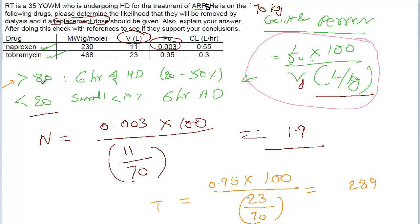It shows that if you perform 6 hours of hemodialysis on this patient, a significant amount of the drug will be removed, possibly 20 to 50 percent of the drug will be removed. Definitely, yes, you need a replacement dose, and that is it.